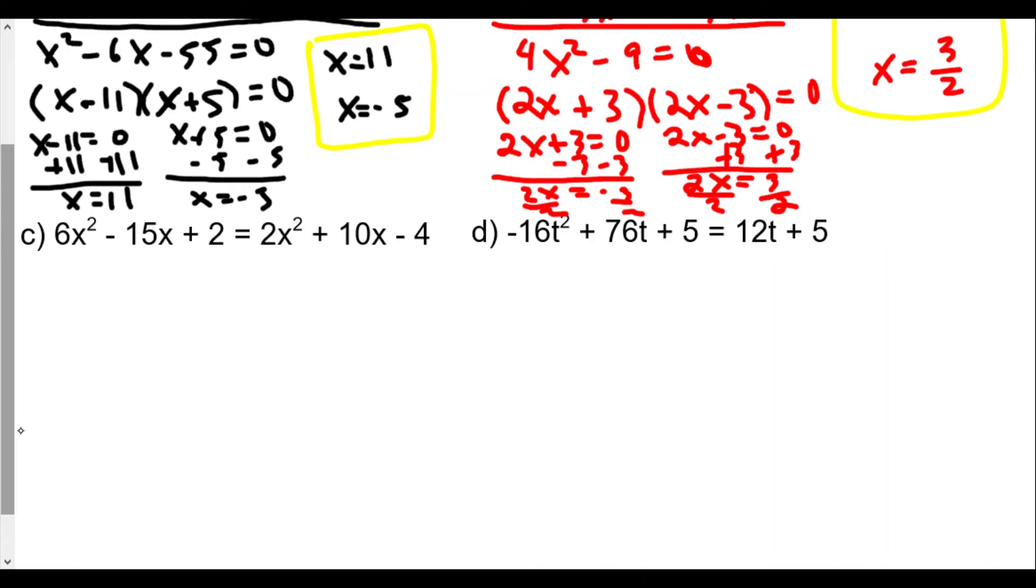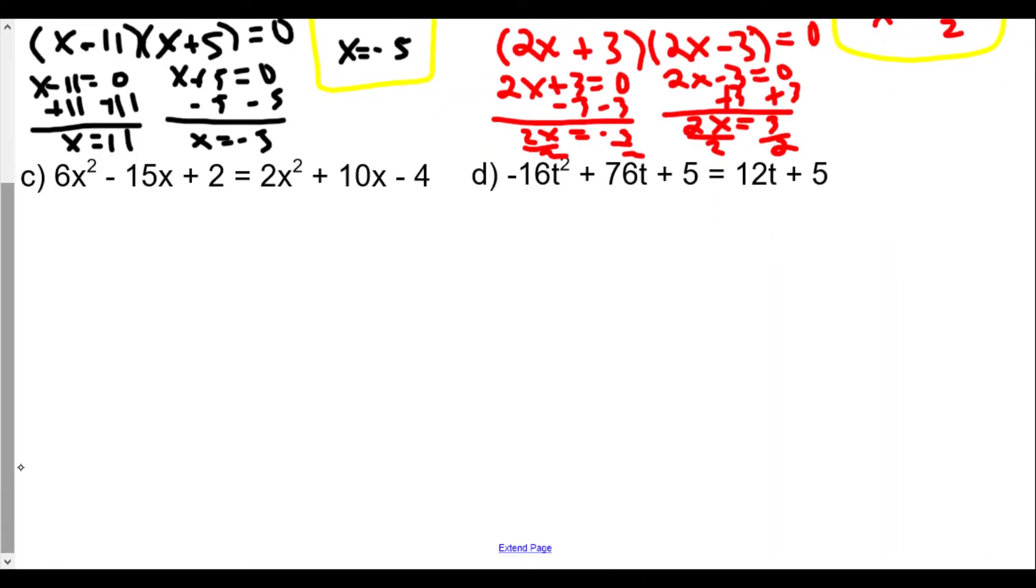Let's continue. We're going to take a look at C here. 6x² - 15x + 2 = 2x² + 10x - 4. We're definitely going to want a smaller x squared. So minus 2x², minus 10x, minus 10x plus 6 = 0.